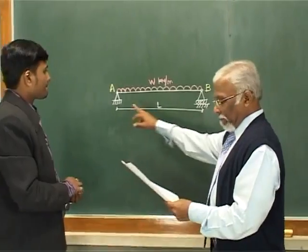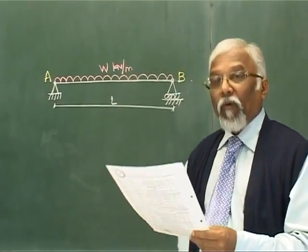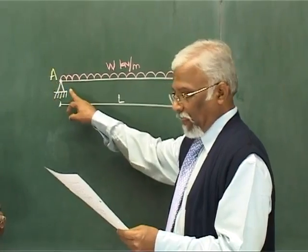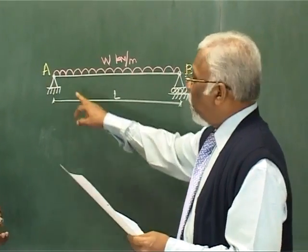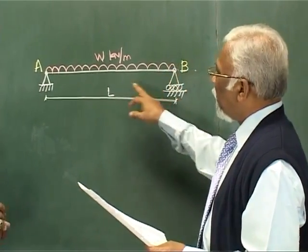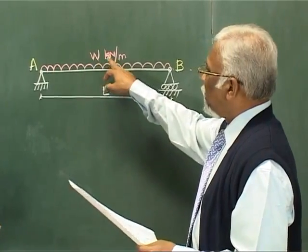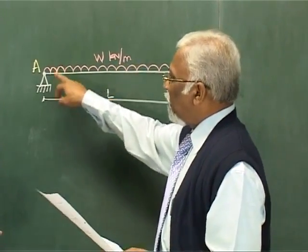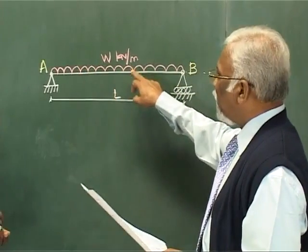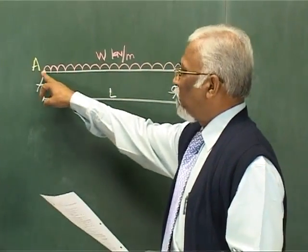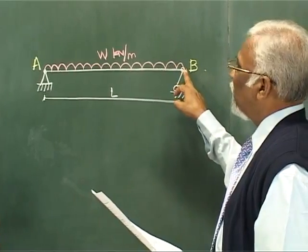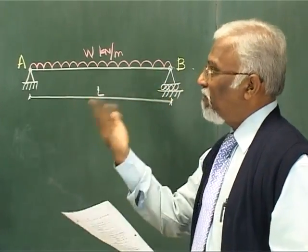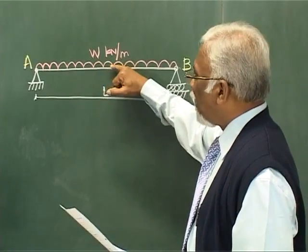There's a figure drawn here. The question is: what is the reaction at A for the beam shown? You have W kilonewtons per meter, and there's a uniformly distributed load going across the beam from one end to the other.